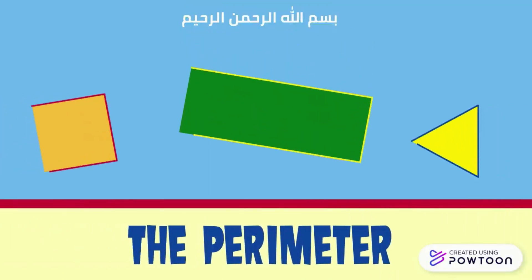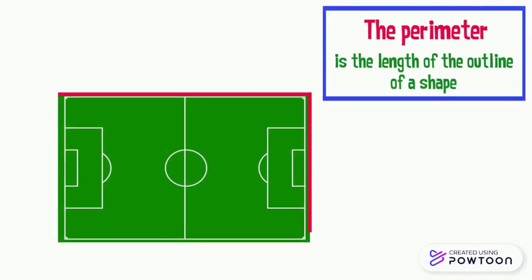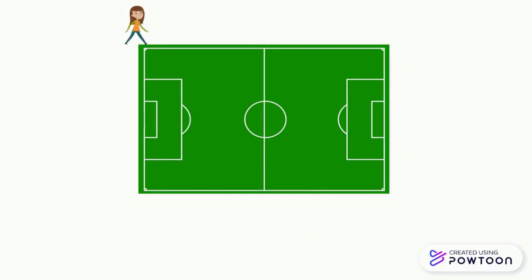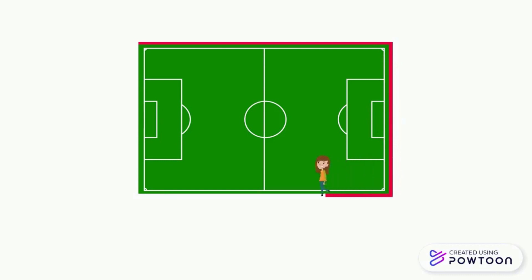The perimeter of a polygon. The perimeter is the length of the outline of a shape. The perimeter of this football field corresponds to the measurement of the red line — it's where the girl is walking. The length of the red line is the perimeter of this land.